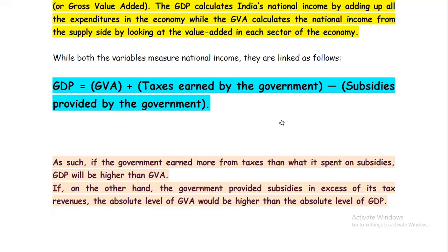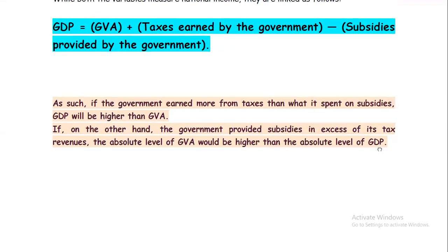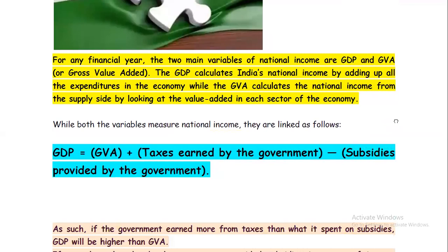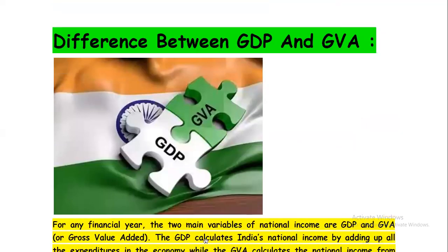I hope now you got the difference. In summary: if the government earns more from taxes than it spends on subsidies, GDP will be higher than GVA. If the government provides subsidies in excess of its tax revenues, the absolute level of GVA would be higher than GDP. GDP is associated with expenditures — adding up all expenditures in the economy — and GVA is associated with value addition on the supply side by each sector. That's the difference between GDP and GVA. Thank you.